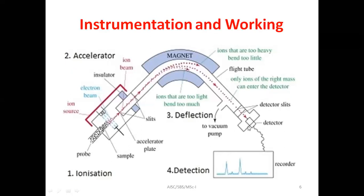For instrumentation and working, the basic principle involves injection of your sample, bombardment of electrons on the molecule, the compound losing one electron to form the molecular ion, and further fragmentation. The mass spectrometer is shown by an inverted V-shaped pipeline-like structure. The first part is the probe where you inject your sample. Then there is an ionization region and an accelerator region where electrons are sprayed or thrown at the molecule.